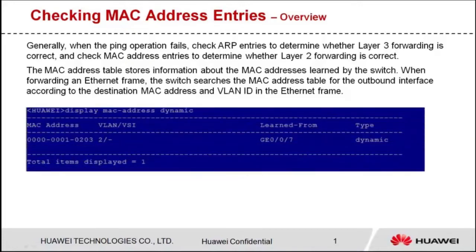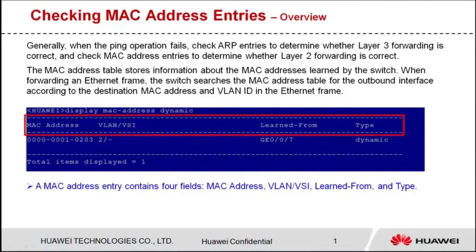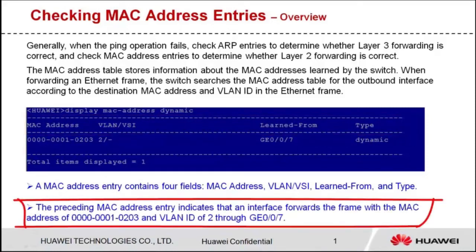Which fields does a MAC address entry contain? A MAC address entry contains the destination MAC address, VLAN or VSI that the device belongs to, the interface that learns the MAC address and outbound interface, and MAC address type. MAC address entries include static, dynamic, and black hole MAC address entries. The preceding MAC address entry indicates that an interface forwards the frame with the MAC address of 0000-0001-0203 and VLAN ID of 2 through GE0/0/7.